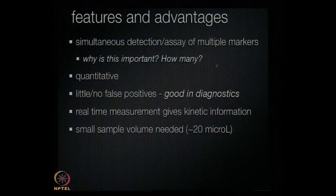In our case, the sample volume needed is very small — it really depends on how good the sample cell is. Using double-sided tape, we can get it down to 20 microliters, and that's like a small droplet. That's very important for clinical samples and for lab experiments too, since proteins are very expensive — the smaller the volume, the more experiments you can do cheaply. It's always better to use as small a volume as possible.